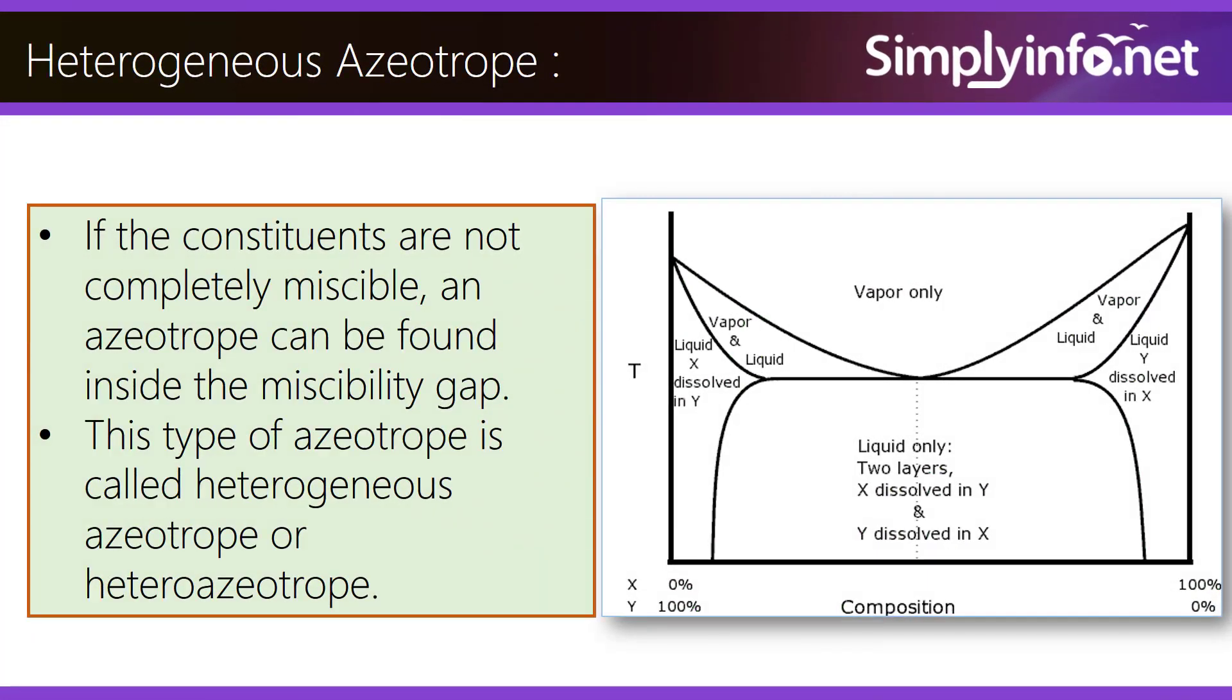If the constituents are not completely miscible, an azeotrope can be found inside the miscibility gap. This type is called a heterogeneous azeotrope or heteroazeotrope.